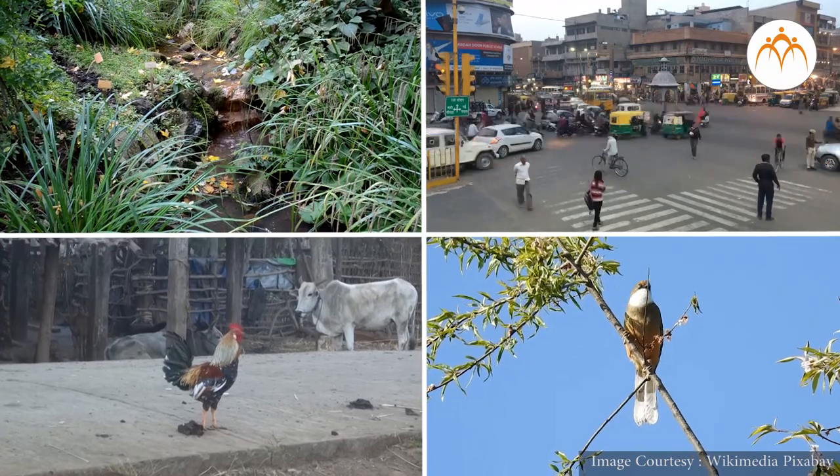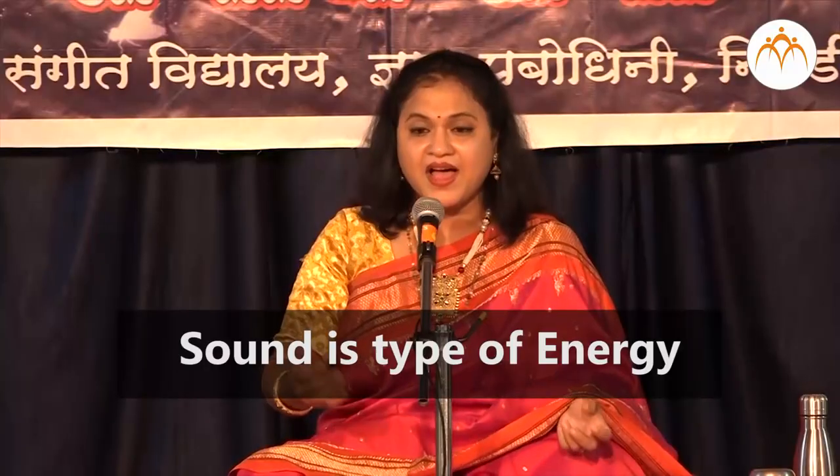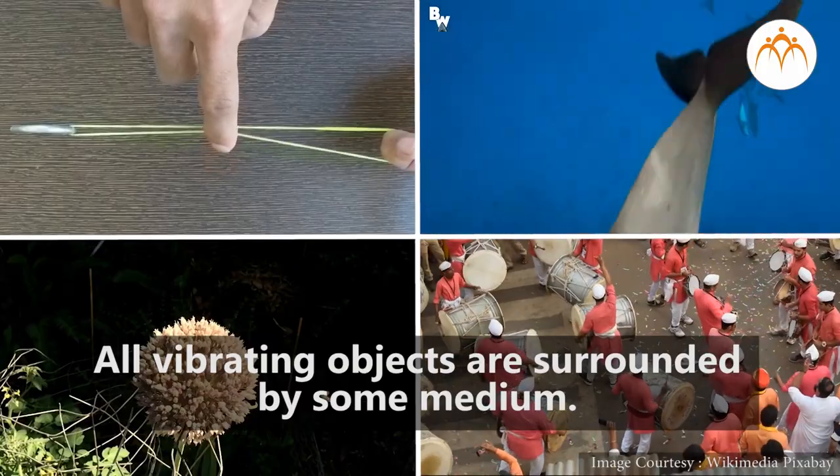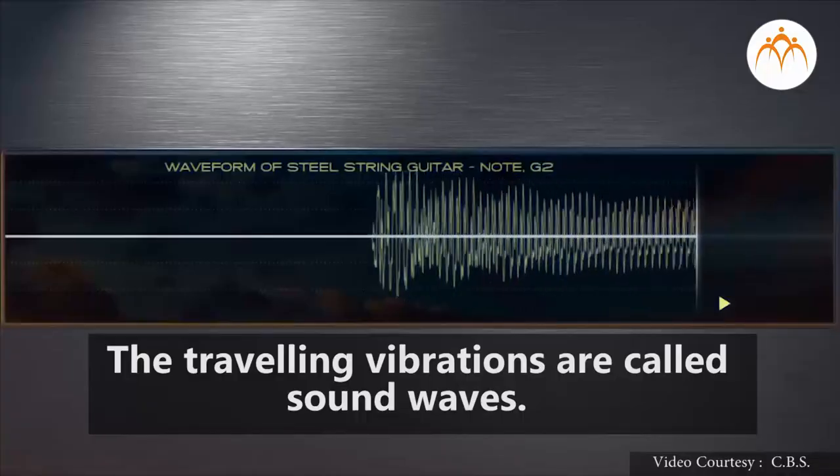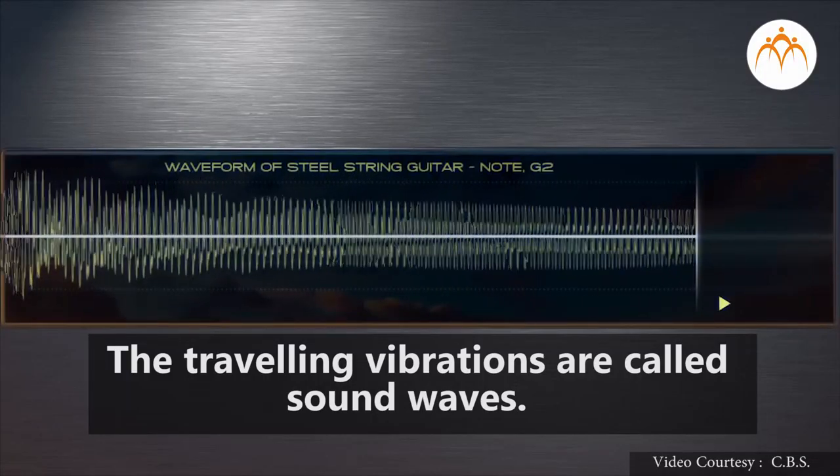We discussed various types of sound. Sound is a type of energy. All vibrating objects are surrounded by some medium. The traveling vibrations are called sound waves.